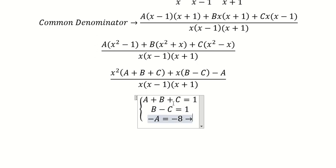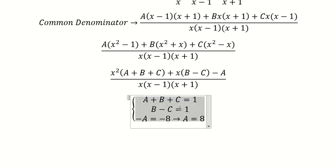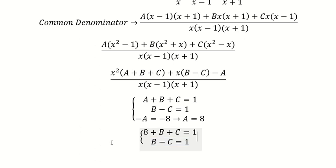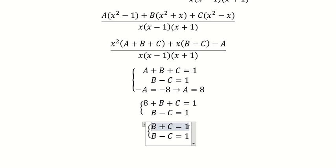From the equation negative A equals negative 8, we get A equals 8. So we put number 8 in here to find the values of B and C. Substituting A equals 8 gives us negative 8 on the right side.